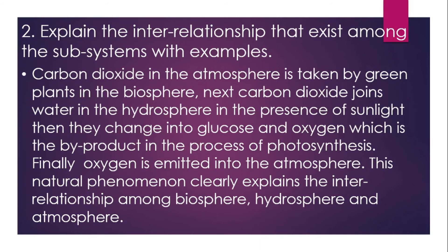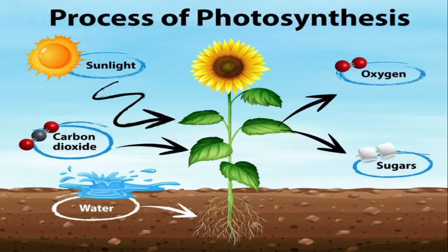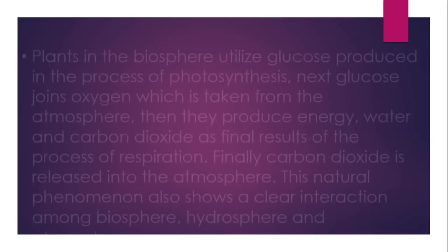Question 2: Explain the interrelationship that exists among the subsystems with examples. First example: carbon dioxide in the atmosphere is taken by green plants in the biosphere. Next, carbon dioxide joins water in the hydrosphere in the presence of sunlight. Then they change into glucose and oxygen in the process of photosynthesis. Finally, oxygen is emitted into the atmosphere — explaining the interrelationship among biosphere, hydrosphere, and atmosphere.